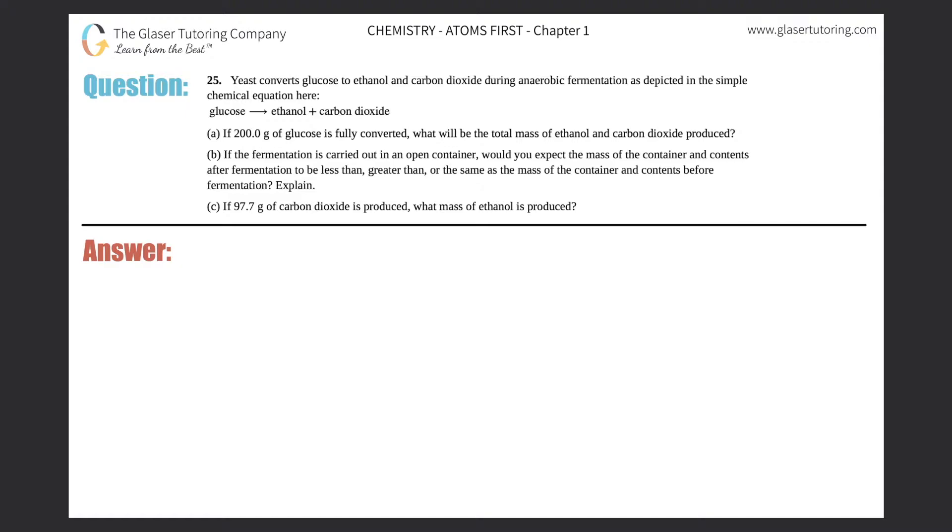Number 25: Yeast converts glucose to ethanol and carbon dioxide during anaerobic fermentation as depicted in the simple chemical equation. Here glucose yields ethanol plus carbon dioxide. Okay, so here I got A, B, and C, so I'm just going to write this down.